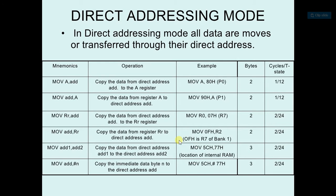Now see this example: MOV A, A0H. A0H is the address of Port 0. So in the execution, the data is fetched from A0H and then copied to the accumulator. This is the way of addressing. We just have to provide the direct address to the instruction and it will do the same thing.